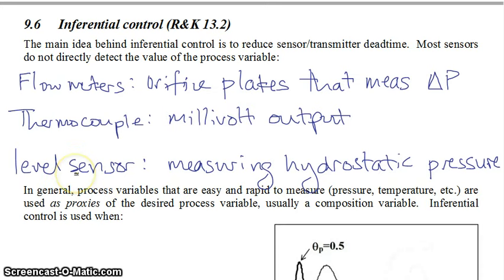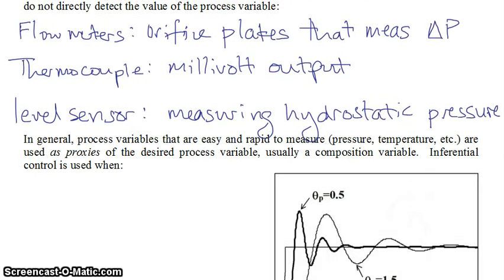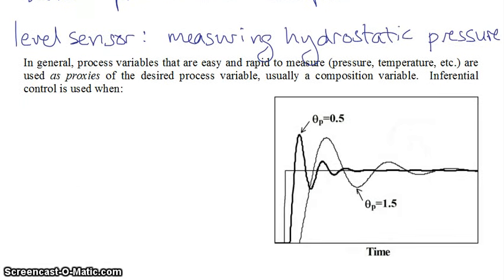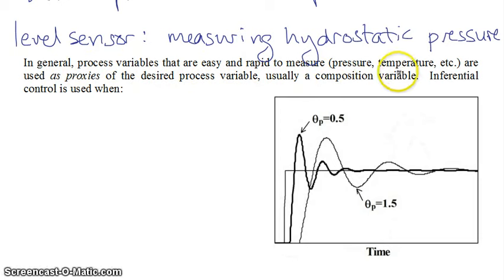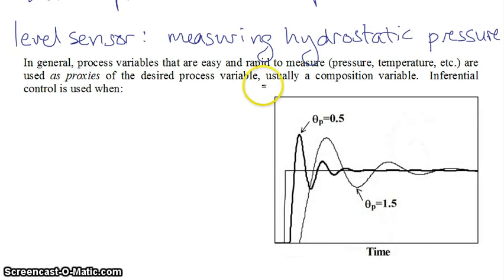But there are assumptions that go into it. Specifically for a level sensor, if it's measuring hydrostatic pressure and converting that into a level, you better be sure that you know what the density of your fluid is. And the same thing is true in inferential control — you need to have a model, but it needs to be a good model. In general, you have process variables that are easy and rapid to measure, things like pressure and temperature, and these can be used as proxies for your desired process variable.